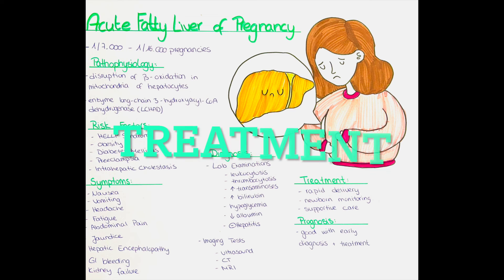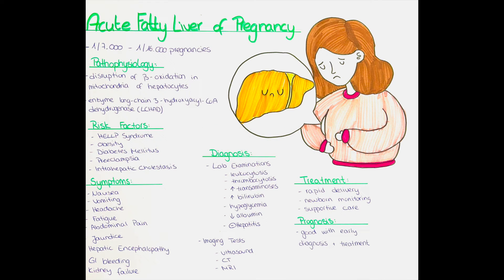What is the treatment of acute fatty liver in pregnancy? The causal treatment is a rapid delivery, typically by cesarean section, to prevent acute liver failure in the mother. Because an enzyme defect in the child can be the cause of the mother's liver failure, the newborn should be monitored and treated if any abnormalities are present.